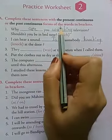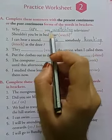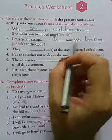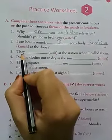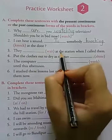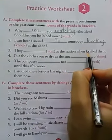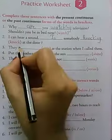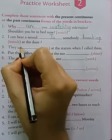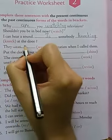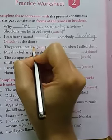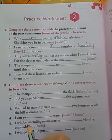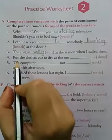Here, present continuous and the past continuous will come in the -ing form, children. Third: they dash at the station when I called them. They were waiting — W-E-R-E, W-A-I-T-I-N-G — waiting. They were waiting at the station when I called them.